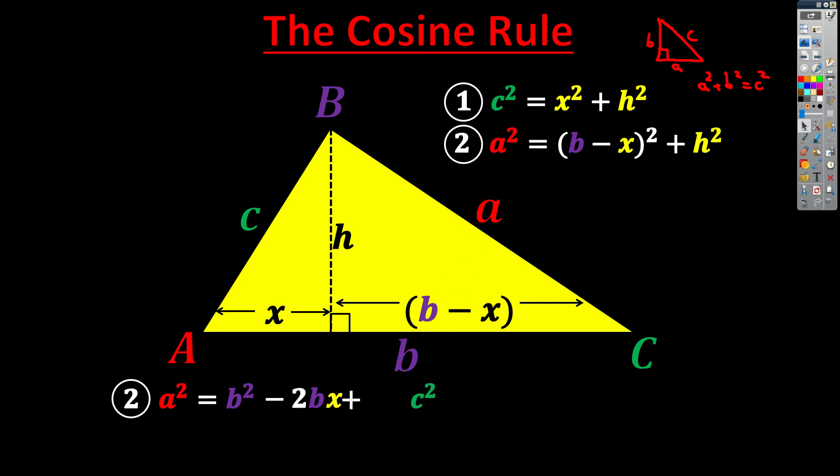Slight bit of rearranging now. Let's rearrange the terms to group things together. So now I've got A squared equals B squared plus C squared minus 2BX. So this is now the only term X that I need to get rid of and get in terms of A, B and C. But now I can use some trigonometry to do that.